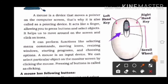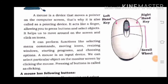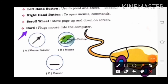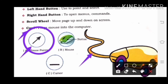See, this is the picture of scroll wheel. And the fourth one is cord — plug mouse into the computer. Mouse is connected with a long plug wire. इसे हम cord कहेंगे। This is the mouse pointer — mouse pointer इस तरीके से हमें show होता है। Mouse पर दो buttons होते हैं: left hand button and right hand button, और उस पर एक scroll wheel होता है। यह है cord।